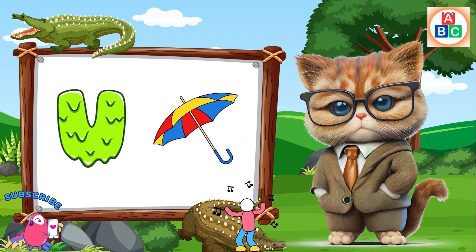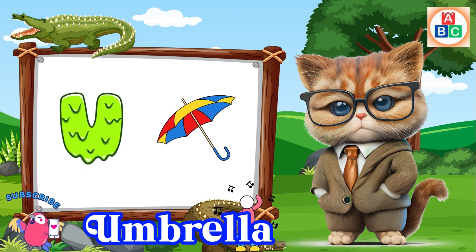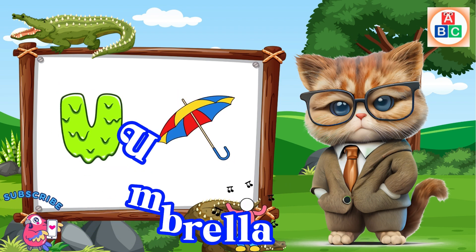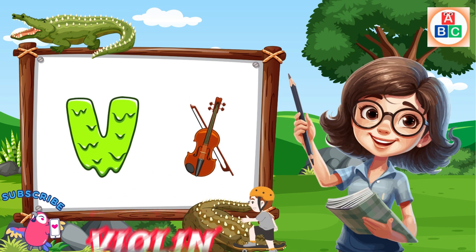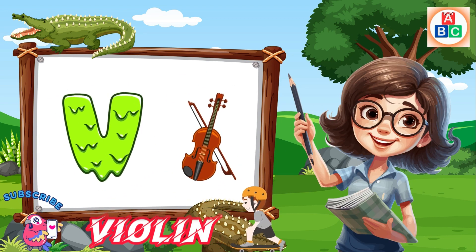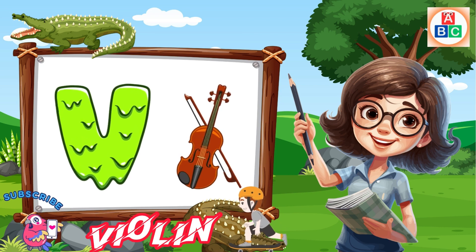U is for umbrella, u-u-umbrella. V is for violin, v-v-violin.